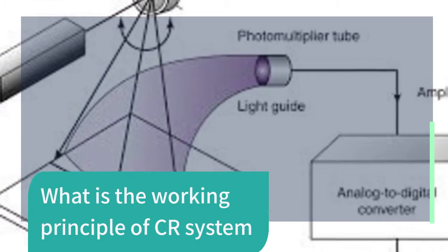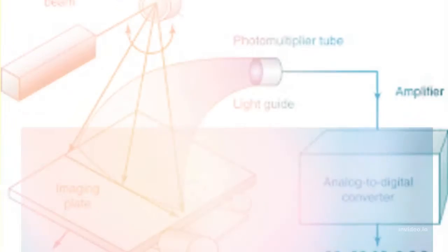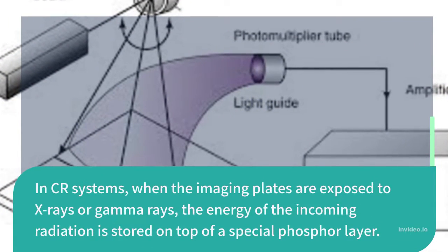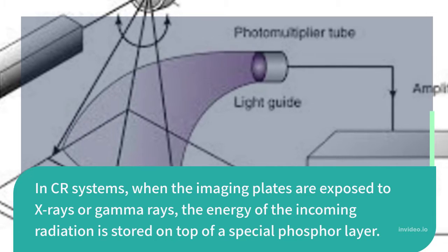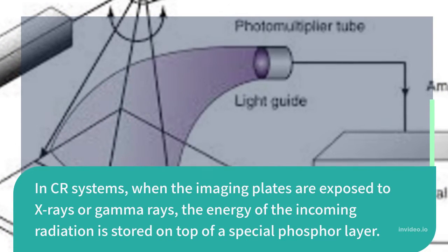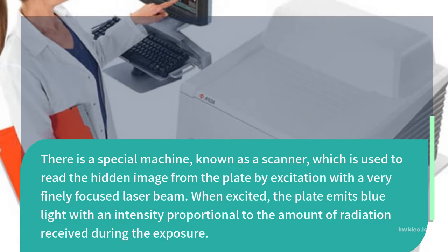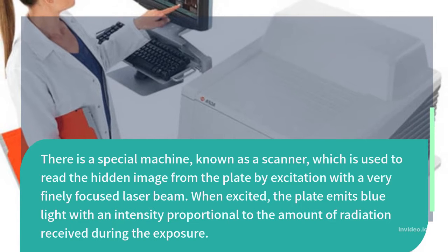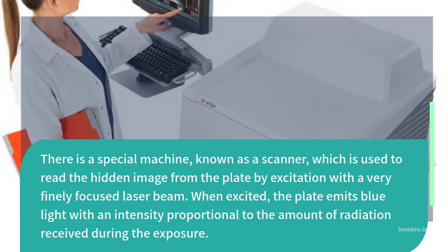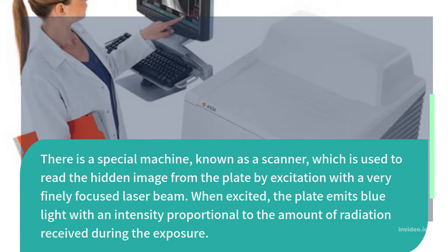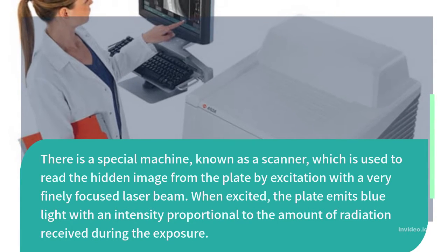What is the working principle of the CR system? In CR systems, when the imaging plates are exposed to X-rays or gamma rays, the energy of the incoming radiation is stored on top of a special phosphor layer. There is a special machine known as a scanner, which is used to read the hidden image from the plate by excitation with a very finely focused laser beam. When excited, the plate emits blue light with an intensity proportional to the amount of radiation received during the exposure.